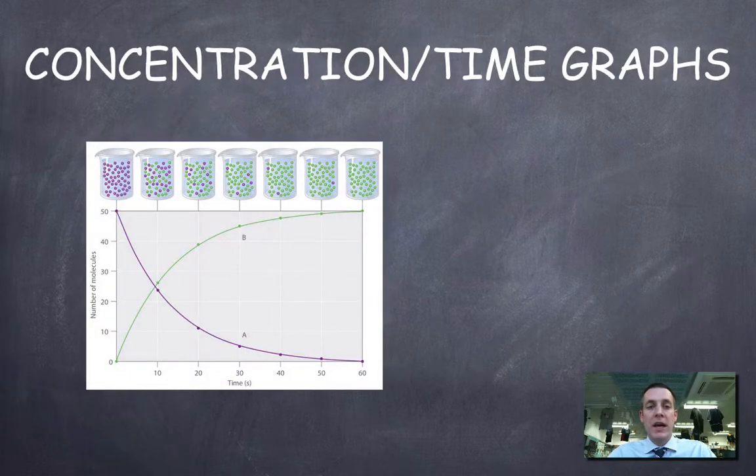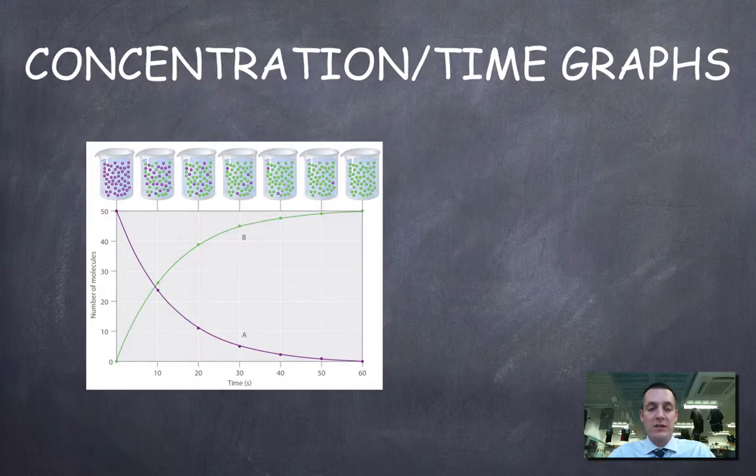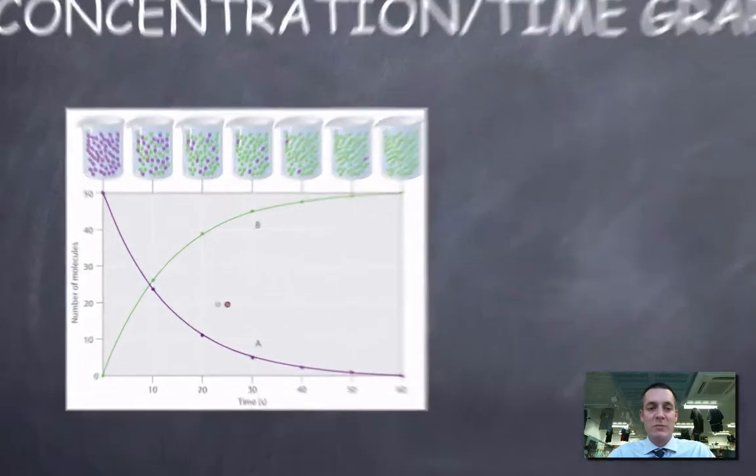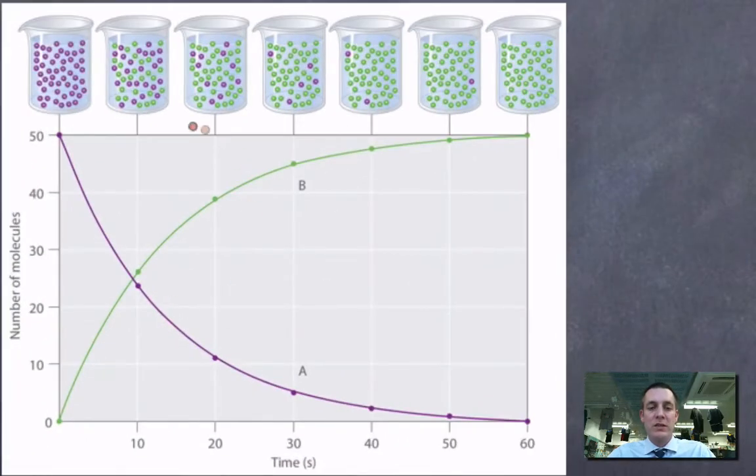Looking at some concentration time graphs now, and in actual fact this graph isn't strictly speaking a concentration time graph, but it's got a nice graphical and pictorial representation of what's going on in a chemical reaction, where we're starting with a reactant A and there's lots of it in this beaker, and gradually it's turning into B.